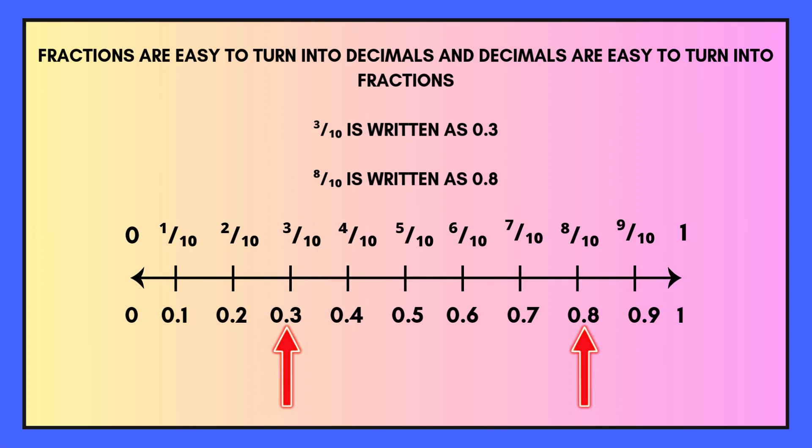Fractions are easy to turn into decimals and decimals are easy to turn into fractions. For example, 3 tenths as a decimal would be written as 0.3. Eight tenths would be written as 0.8 as a decimal.